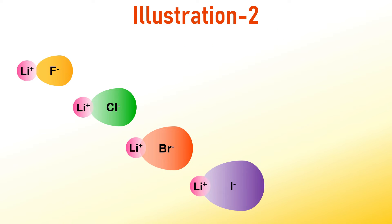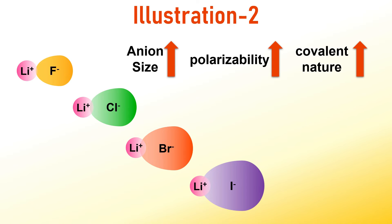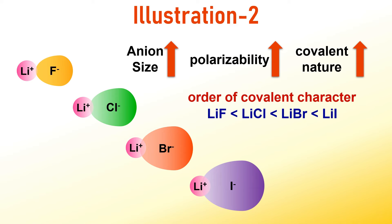However, the trend changes when we maintain the same metal but alter the halide ion. For instance, consider the covalent character of the bond when we go from lithium fluoride to lithium iodide. Here, the increase in covalent character is due to the growing size of the anion. It is well known that polarizability, and consequently the covalent character, increases as the size of the anion becomes larger.